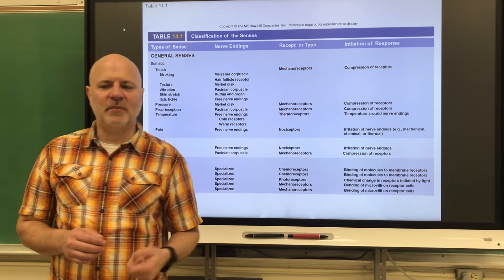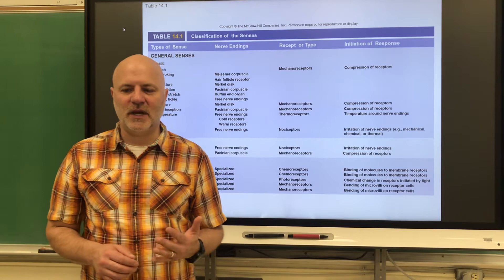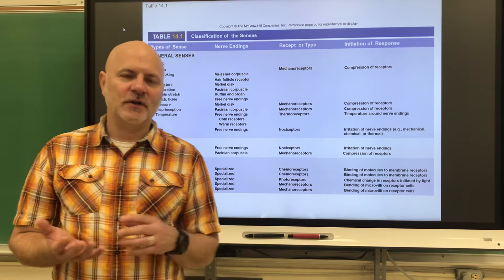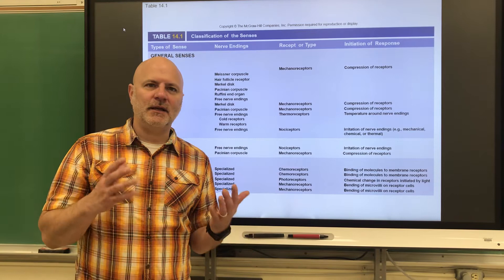Let's look at classification of receptors by location. Some are exteroceptors — external receptors sensitive to stimuli arising from outside the body, found near the body surface. These would be touch, pressure, pain, temperature, and our special senses, which are those five senses we typically think about. Next are visceral receptors, which respond to stimuli within the body.